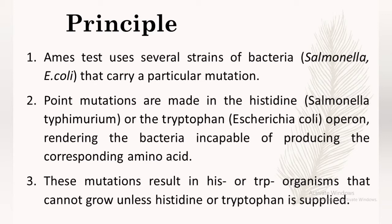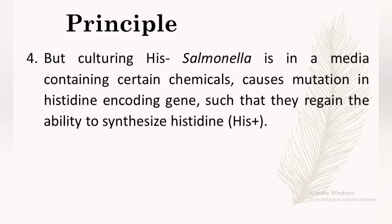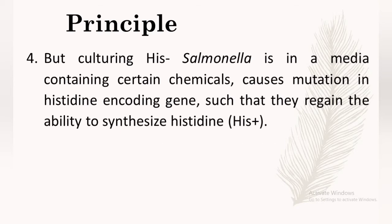As I told you, tryptophan and histidine are required for the growth of bacteria. Culturing histidine-negative Salmonella in a media containing certain chemicals causes mutation in the histidine-encoding gene such that they regain the ability to synthesize histidine — that is, they become histidine-positive. These reverted bacteria will then grow in histidine- or tryptophan-deficient media because the chemical added has mutagenic properties, causing it to re-encode the histidine and tryptophan genes and restart their production.